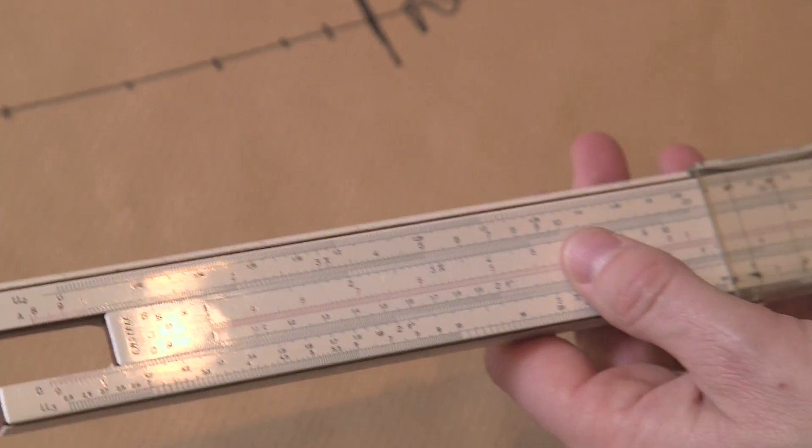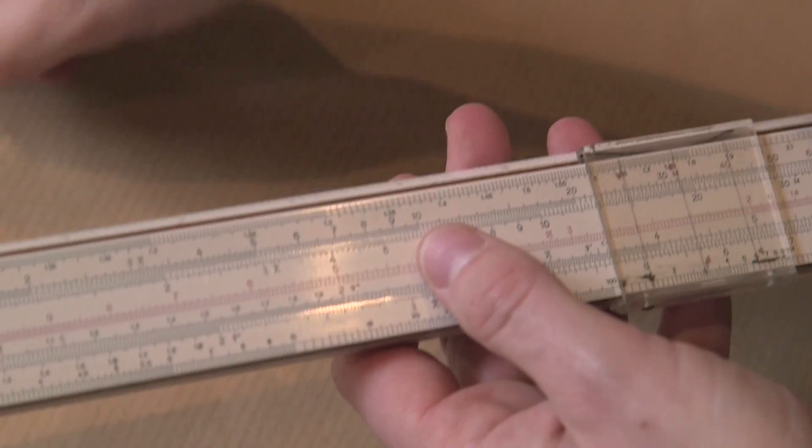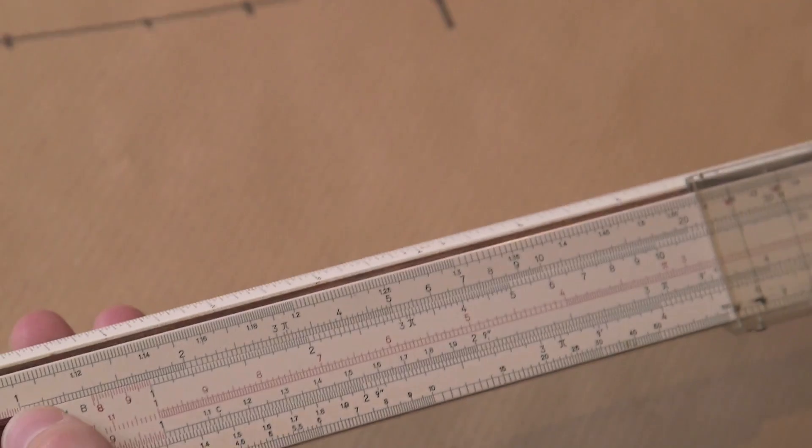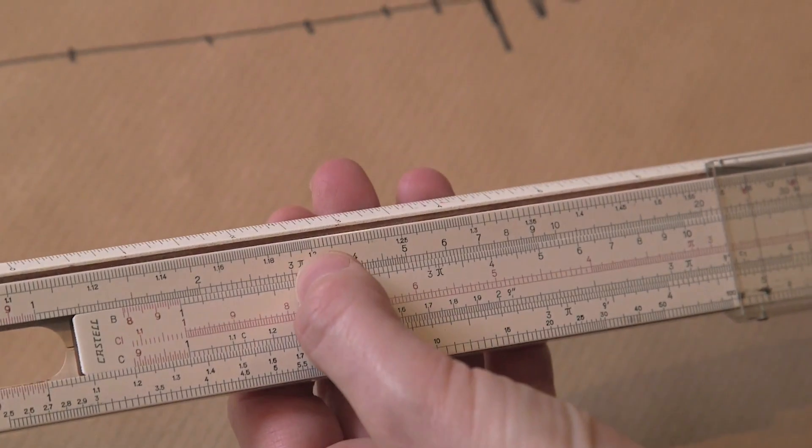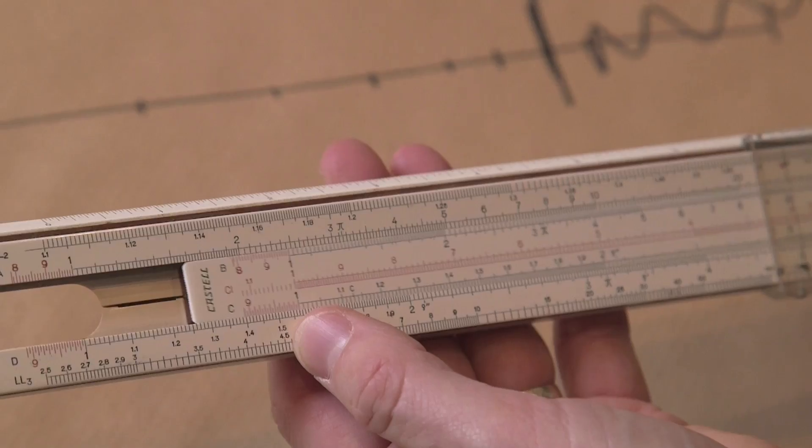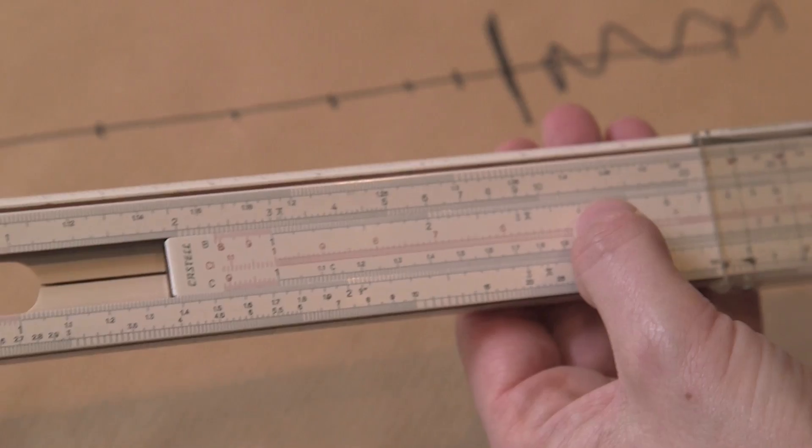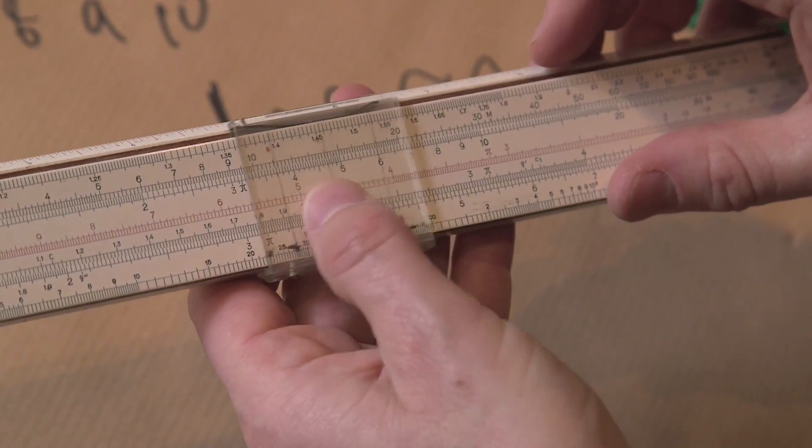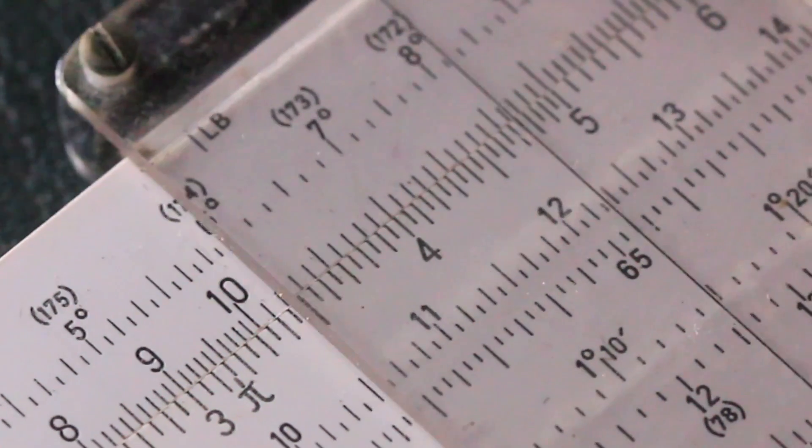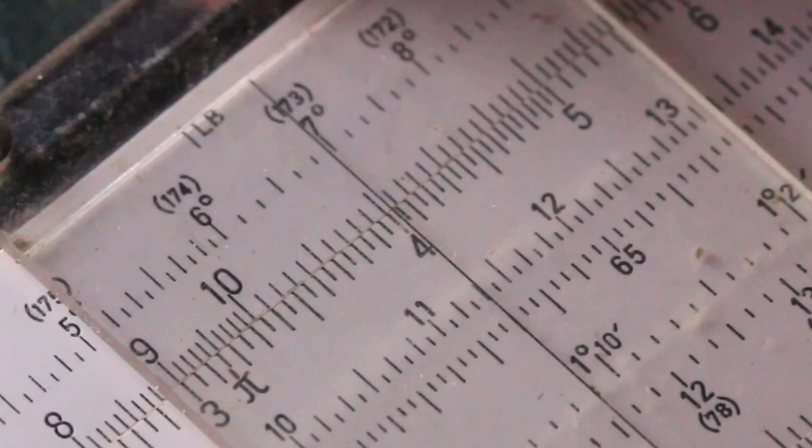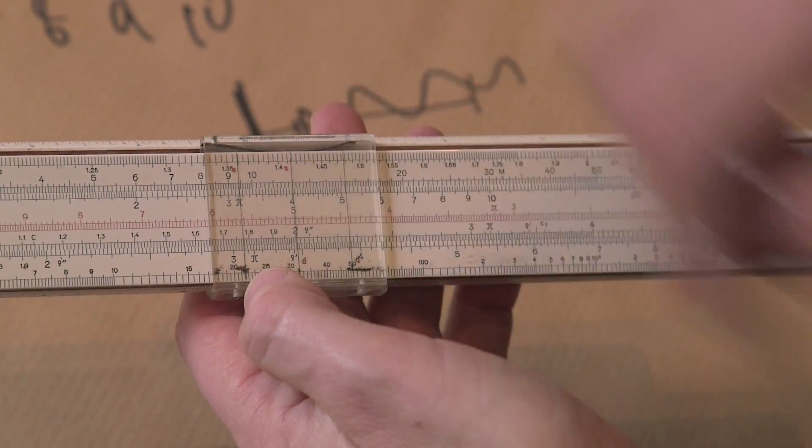Let's say we want to multiply three times four. We look at A and we go to where three is, and we put the bottom one at one where three is. Then we go up four, and then we read where four is on the original one, and you can see four is at twelve, because it's ten, eleven, twelve.